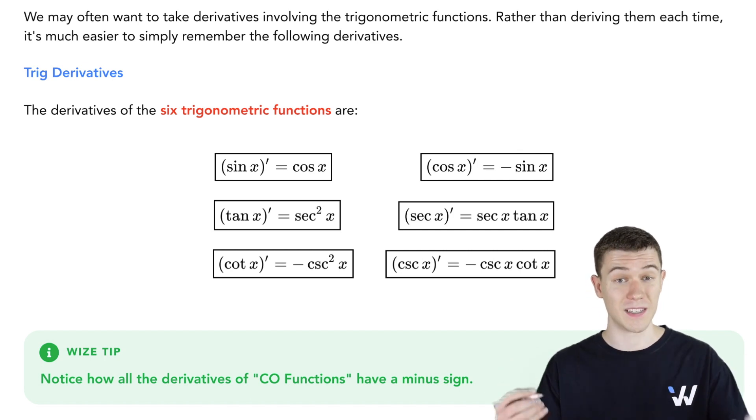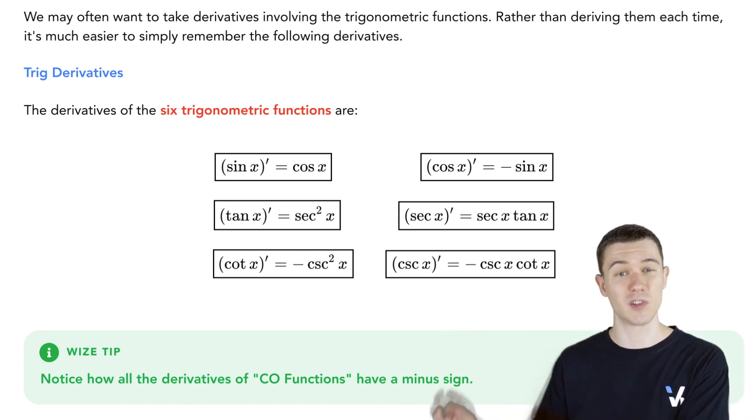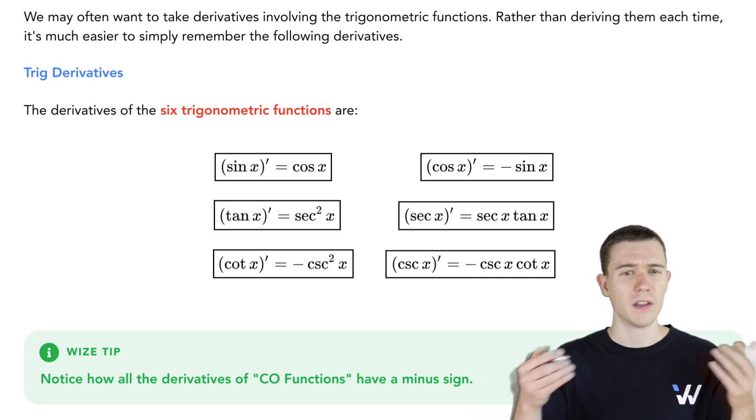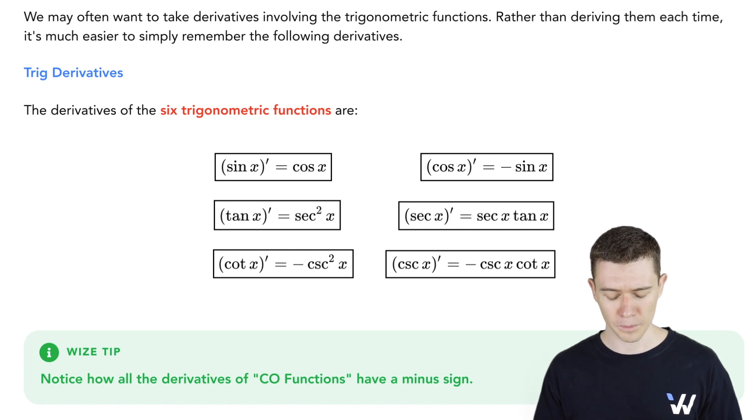Tangent and cotangent have a similar pattern. The derivative of tangent is secant squared of x. And the derivative of cotangent is minus cosecant squared of x. So the tangent and the secant squared go. The cotangent and the cosecant squared go.